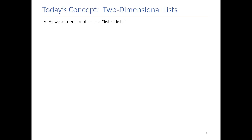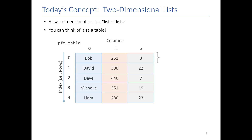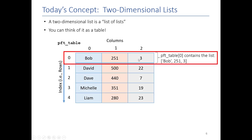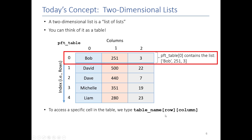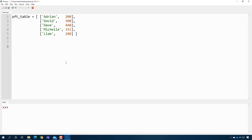You can think of a two-dimensional list as just being a list of lists — it's really just a table. Each row in the table represents one entity, like a person or an airplane. If we want to access a specific cell in the table, we use bracket notation.